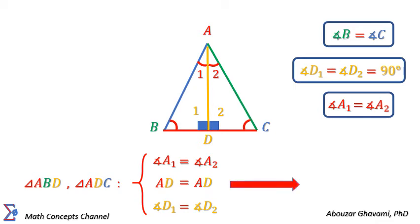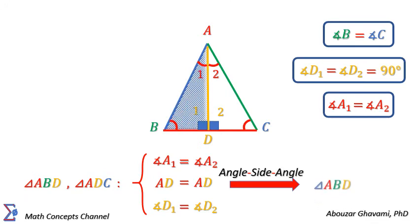Therefore, based on the equality of two angles and the side between, triangle ABD is congruent with triangle ADC.